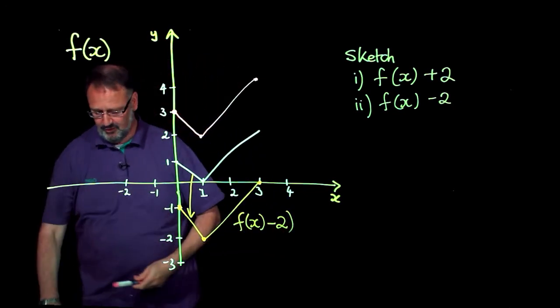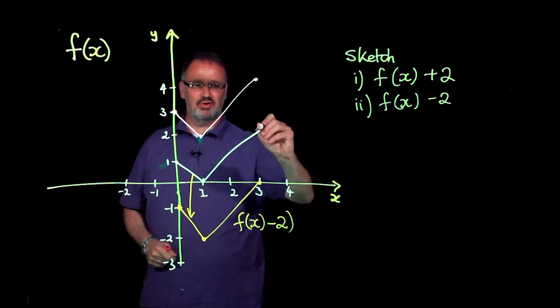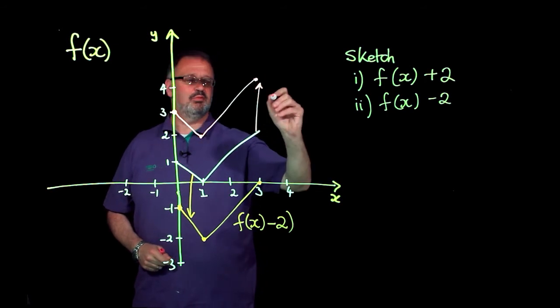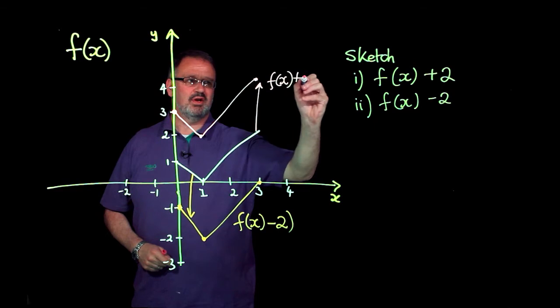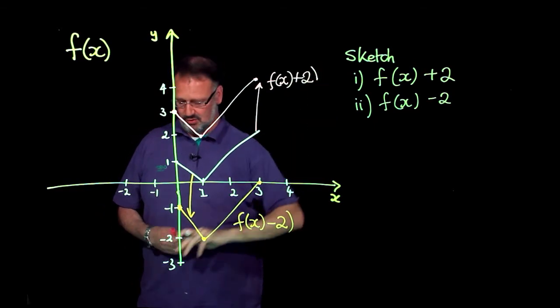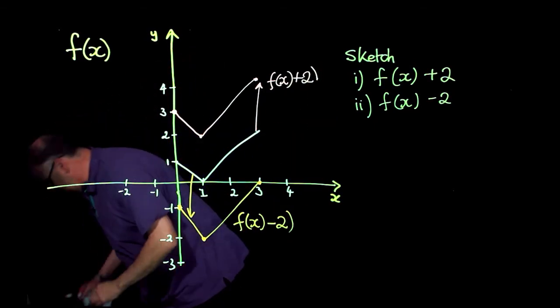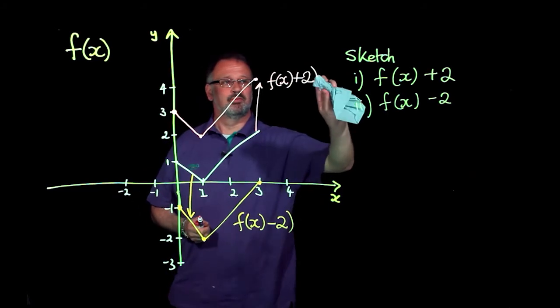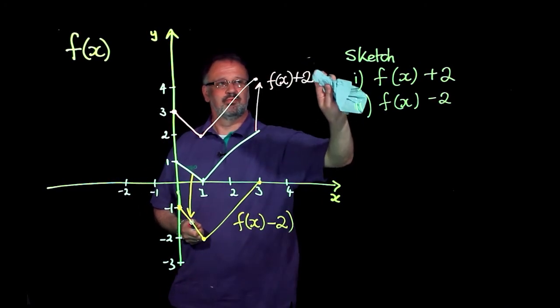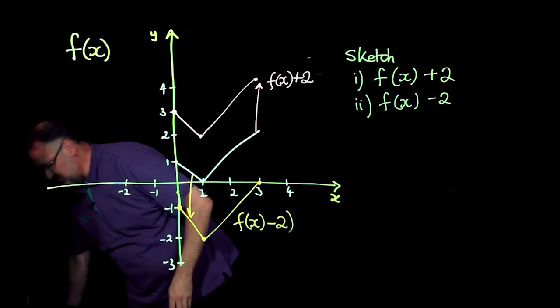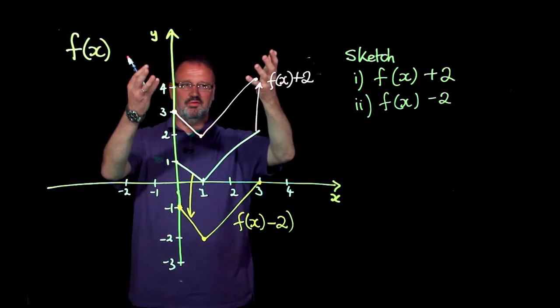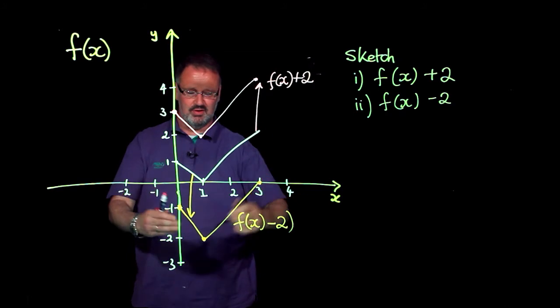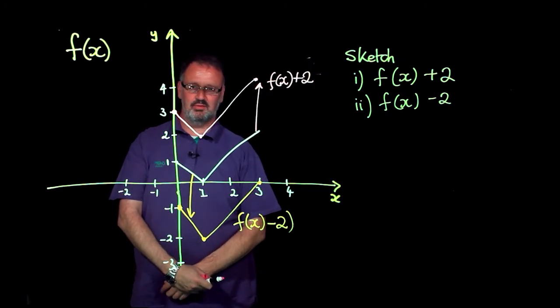And our first question was to add 2 and physically it moves up and this sketch here is f(x) plus 2. So we have f(x) plus 2 is our pink curve here having moved up the axis two units, this one having moved down the axis by two units.